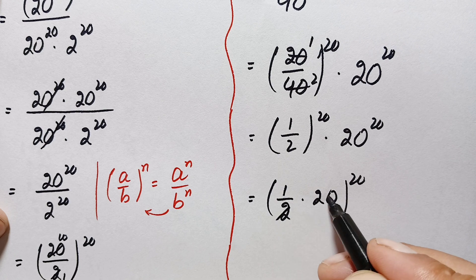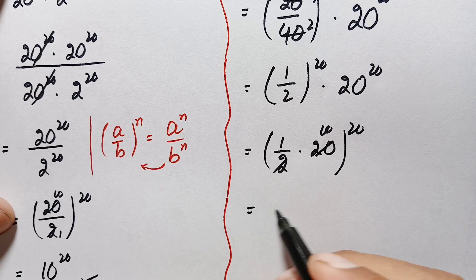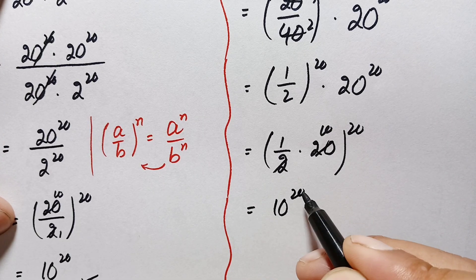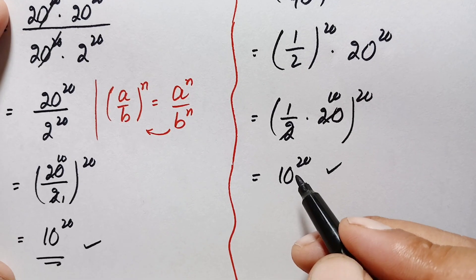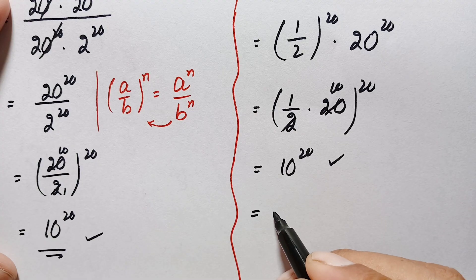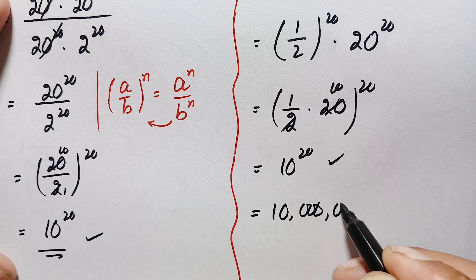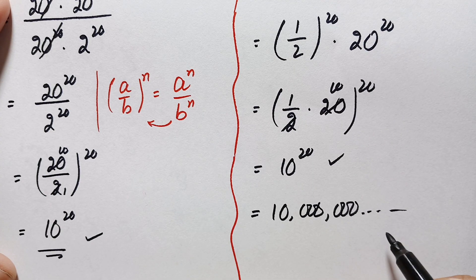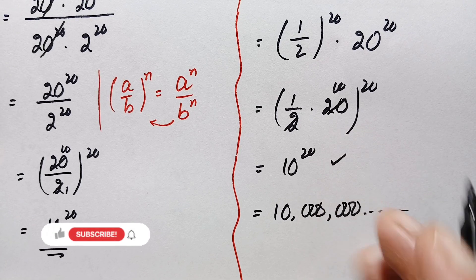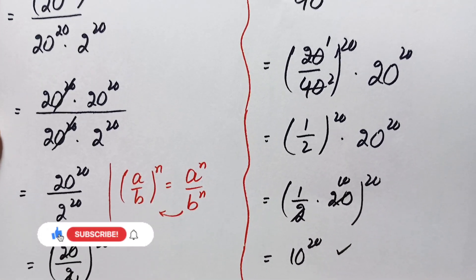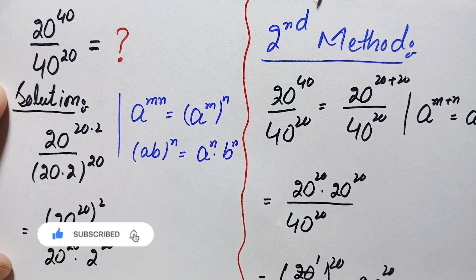These two numbers now share the same power, so we multiply the bases: one-half times 20 equals 10. So this becomes 10 raised to power 20. Our final answer using the second method is also 10 raised to power 20. This is a very large number — it is simply 1 followed by 20 zeros. Don't forget to subscribe to my YouTube channel for more interesting step-by-step math solutions. Thanks for watching.